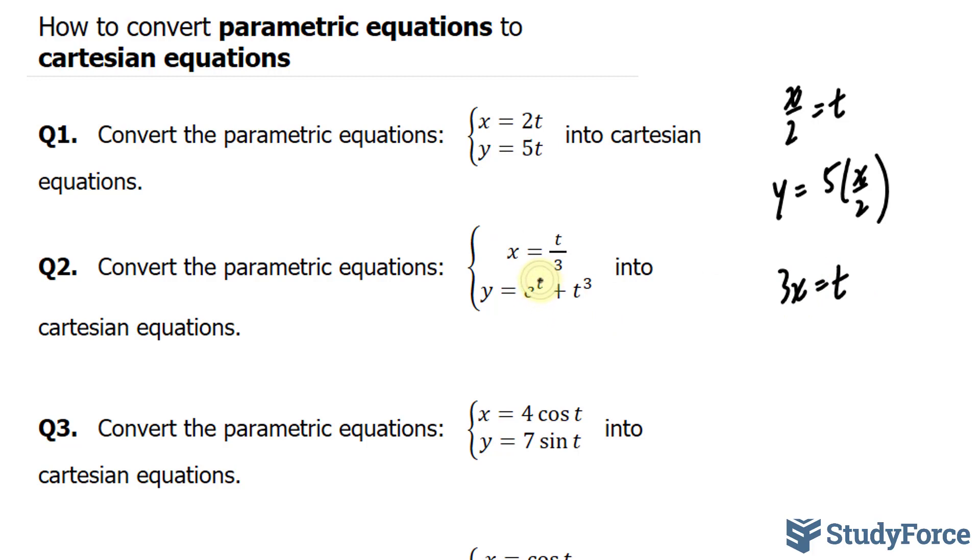And then I'll substitute 3x into this t and into that t. This gives me y is equal to e to the power of 3x plus 3x to the power of 3. If I expand this term, I end up with this term becoming 27x to the power of 3.